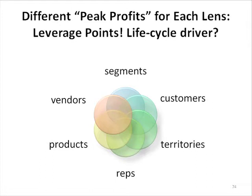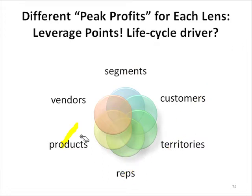If we look at internal peak profit for customers, maybe 20% of the customers give us a peak of 140. If we looked at products, 15% gave us 1,000% or something ridiculous. If we looked at vendors, another 15% of the vendors gave us 350. If we looked at customer segments, territories, or reps, we will find different numbers for all these lenses of looking at how we get to our bottom line.